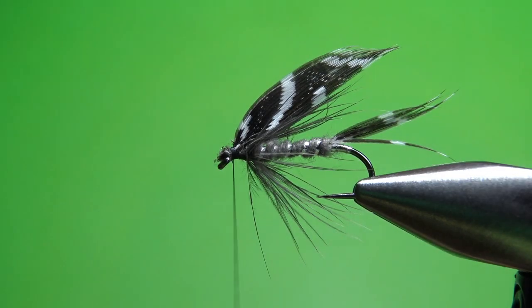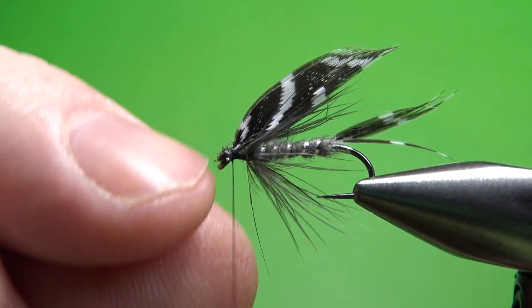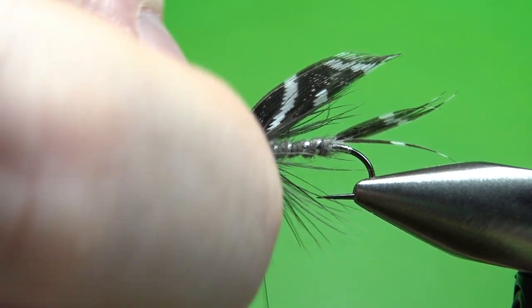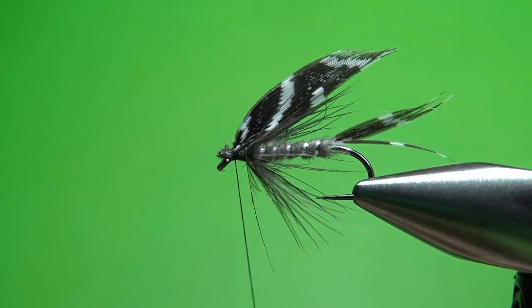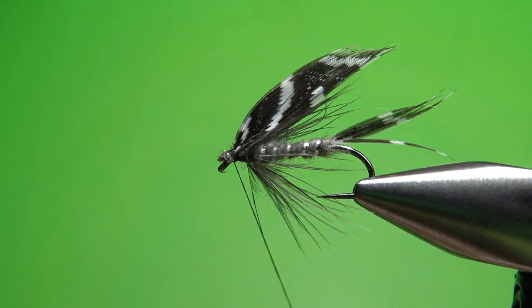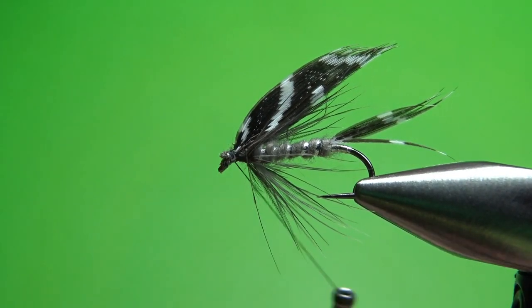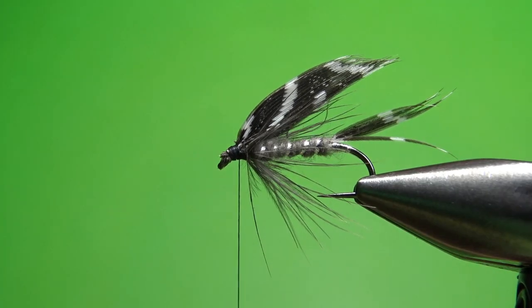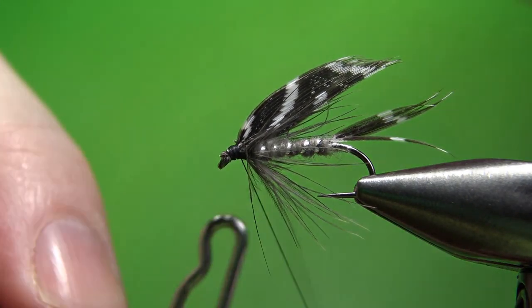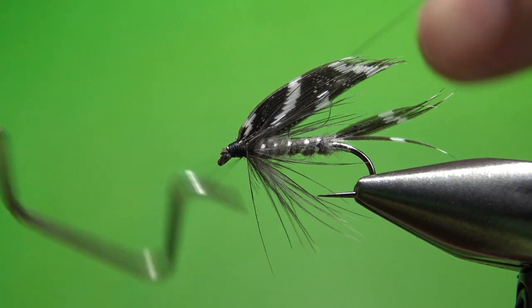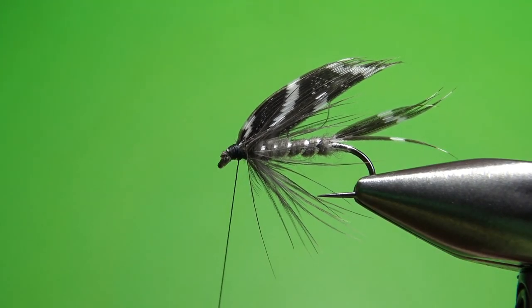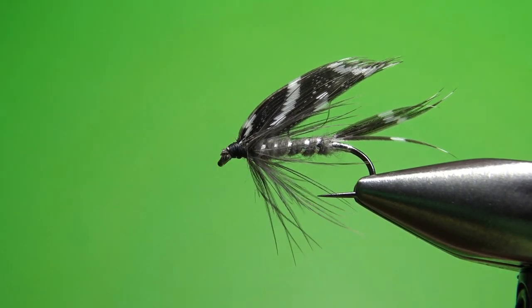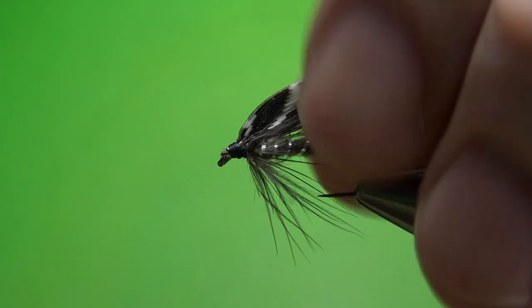So get this as close as you can get it. I'm going to push these up with my fingernails. Just helps smooth out this head right here. Okay, I didn't bury them all, but I think we're good enough to whip finish this and move on. Four or five turns right there. Put my scissors through and the Beauty is done.